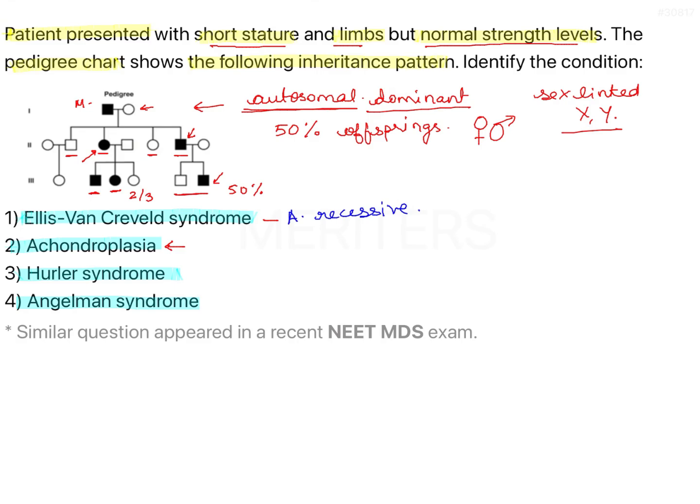Achondroplasia, as already mentioned, is an autosomal dominant trait, giving a 50% chance for offspring to inherit the condition from an affected parent. Hurler syndrome is a defect of mucopolysaccharide metabolism and is a lysosomal storage disease. It presents with skeletal abnormality, cognitive impairment, heart disease, respiratory problems, a specific facial appearance, and reduced life expectancy. It has been mapped to chromosome 4p16.3 and follows an autosomal recessive pattern.